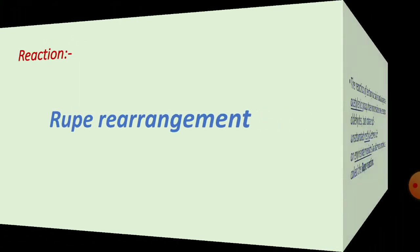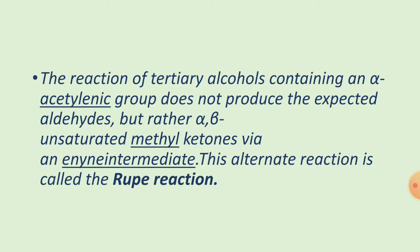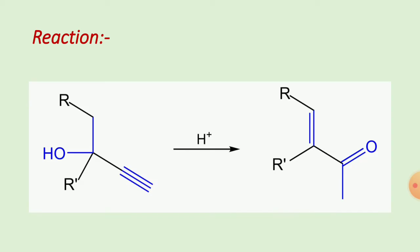The next reaction is the Rupe rearrangement. This involves a tertiary alcohol containing an alpha-acetylenic group, which does not produce the expected aldehyde but rather an alpha-beta unsaturated methyl ketone, proceeding through a carbocation intermediate. This alternate reaction pathway is called the Rupe rearrangement.